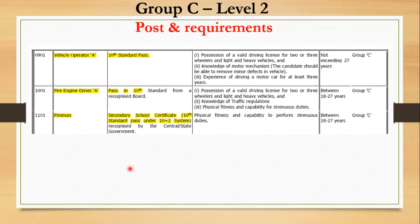There are other Group C posts: for Vehicle Operator, passing 10th standard is sufficient — this is a very good opportunity for candidates who are just 10th pass. They should have a valid driver's license and at least 3 years of driving experience. The age should not exceed 27 years, with a minimum age of 18 years.